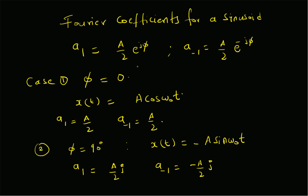After simplification, the Fourier coefficients are a₁ = (A/2)·e^(jφ) and a₋₁ = (A/2)·e^(-jφ), which are conjugates of each other. In the special case φ = 0, x(t) is a pure cosine and a₁ = a₋₁ = A/2 (real values). When φ = 90°, x(t) = -A·sin(ω₀t) and a₁ = jA/2, a₋₁ = -jA/2. Thanks for watching.